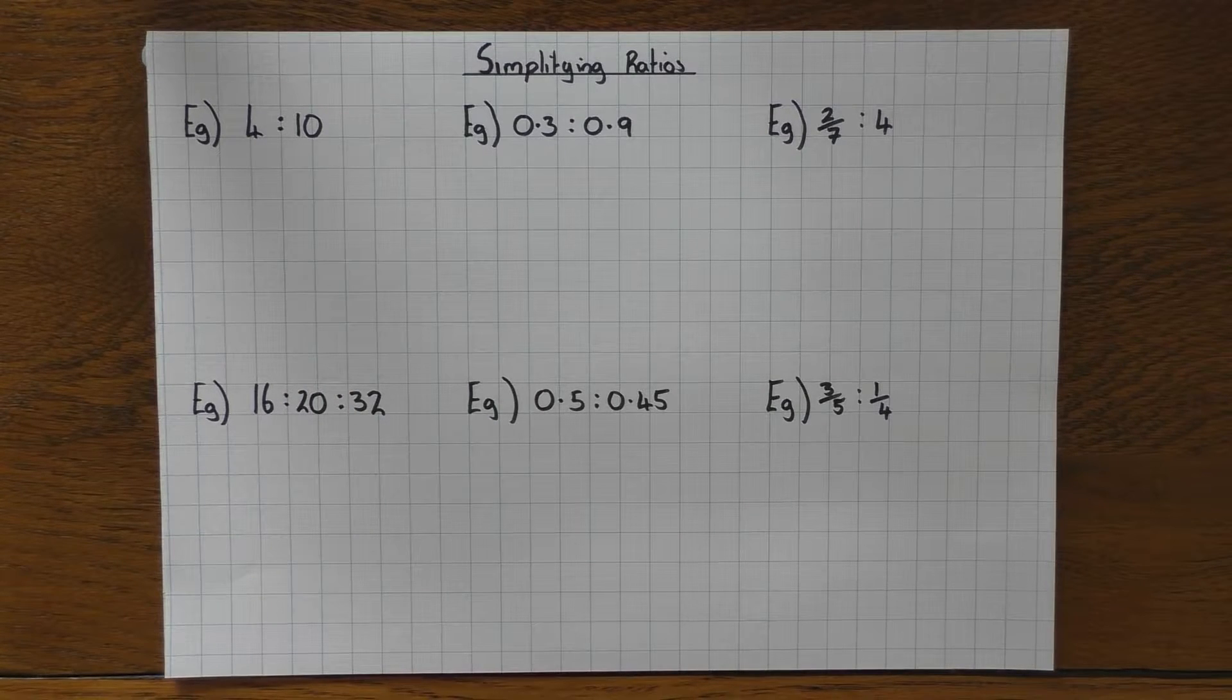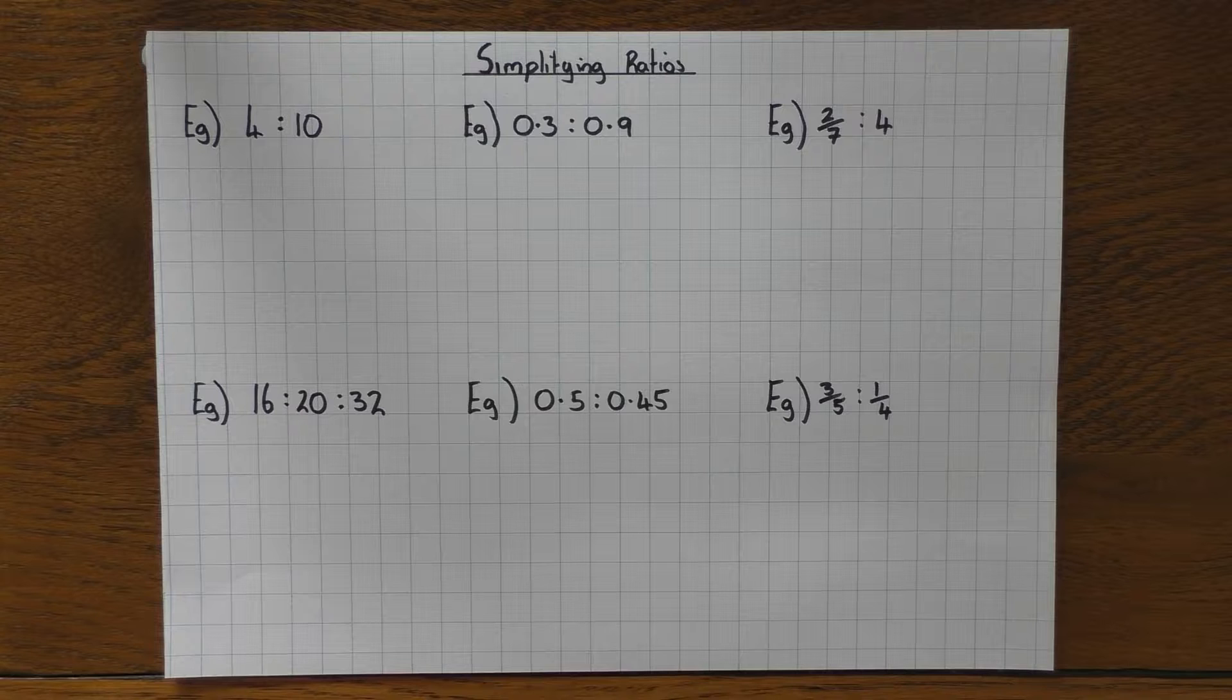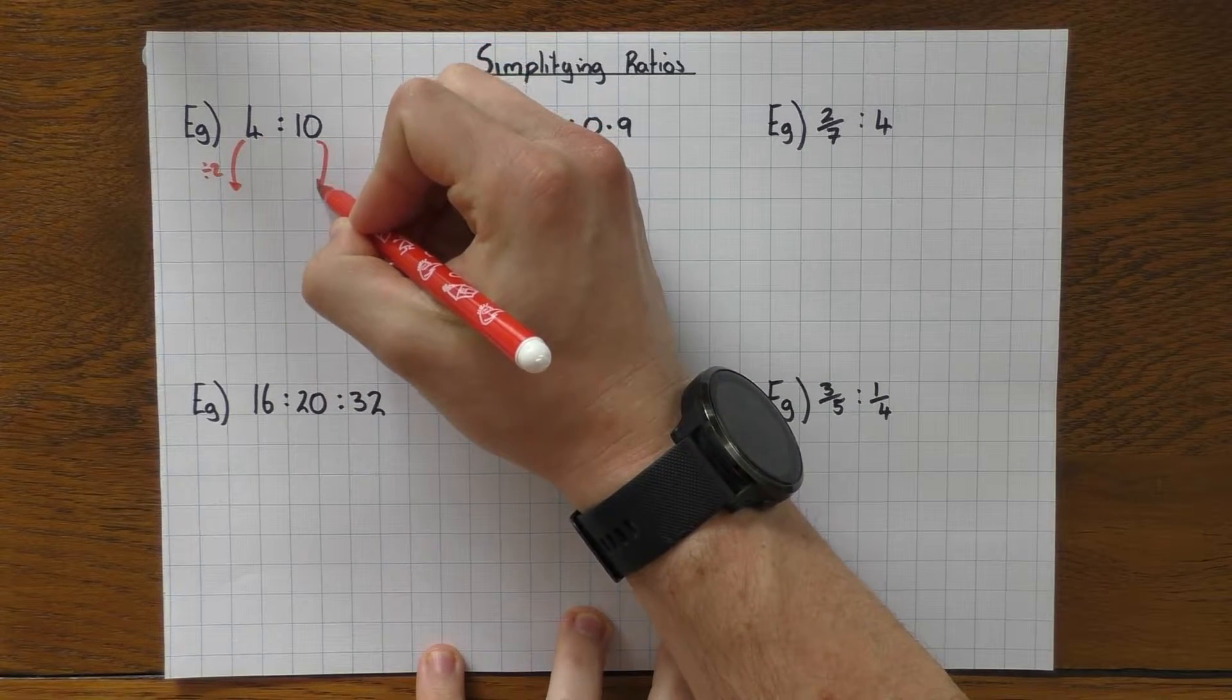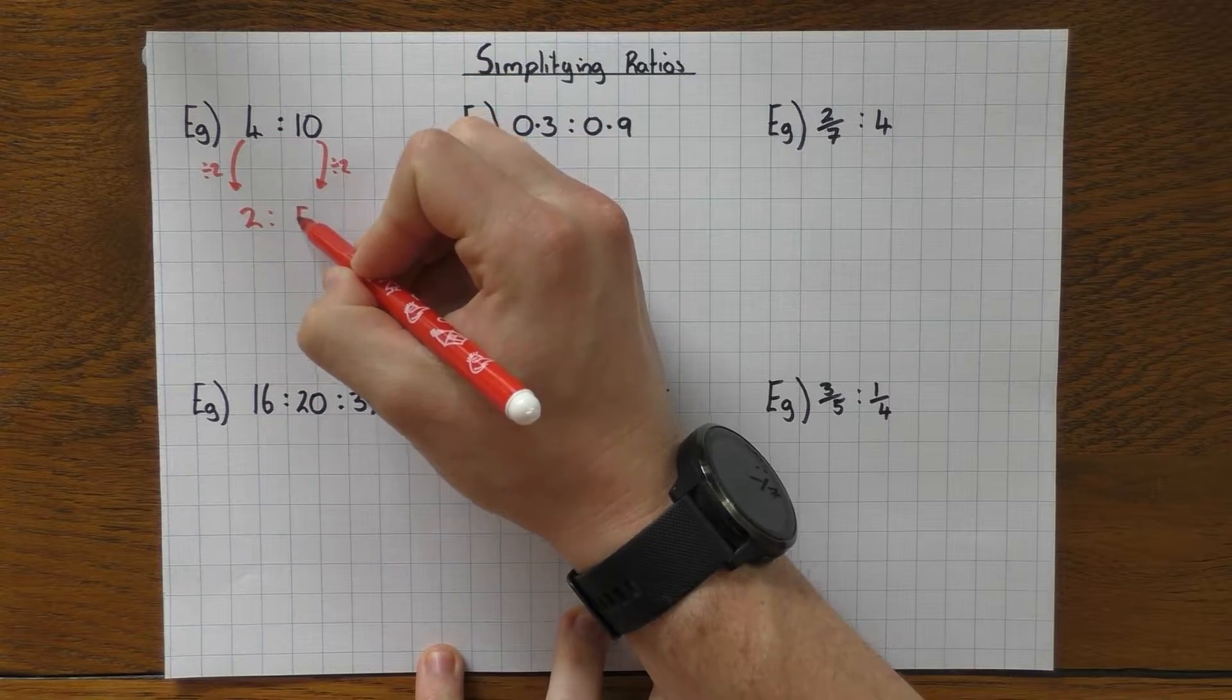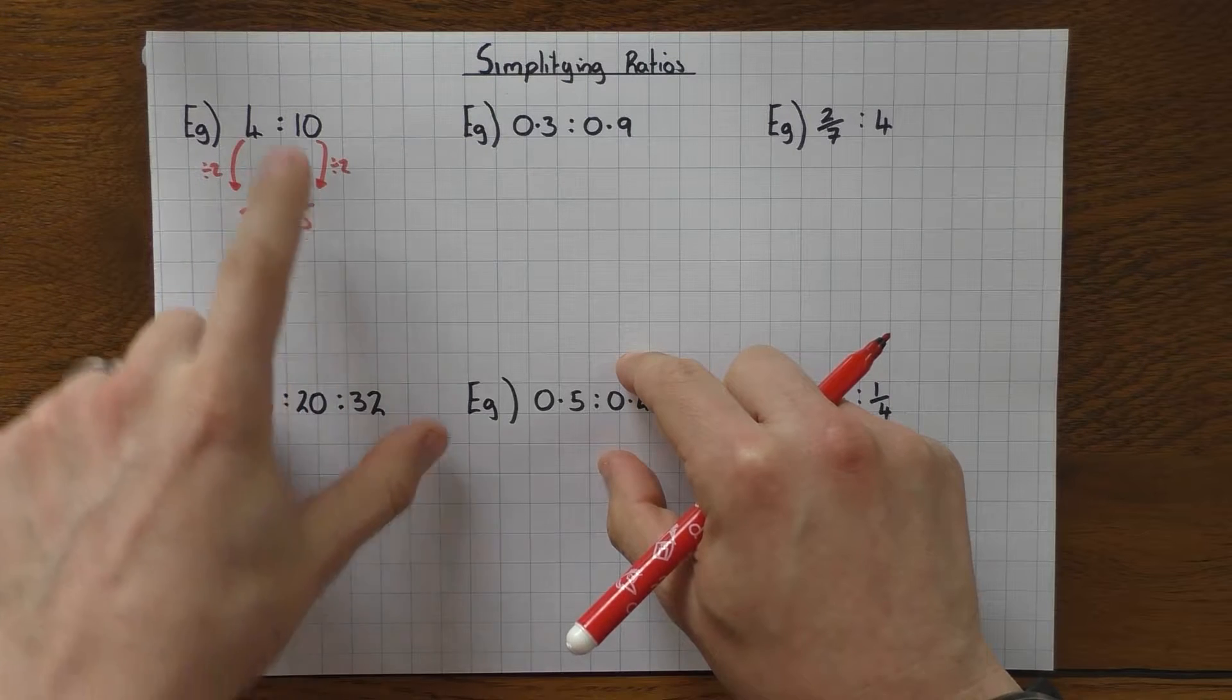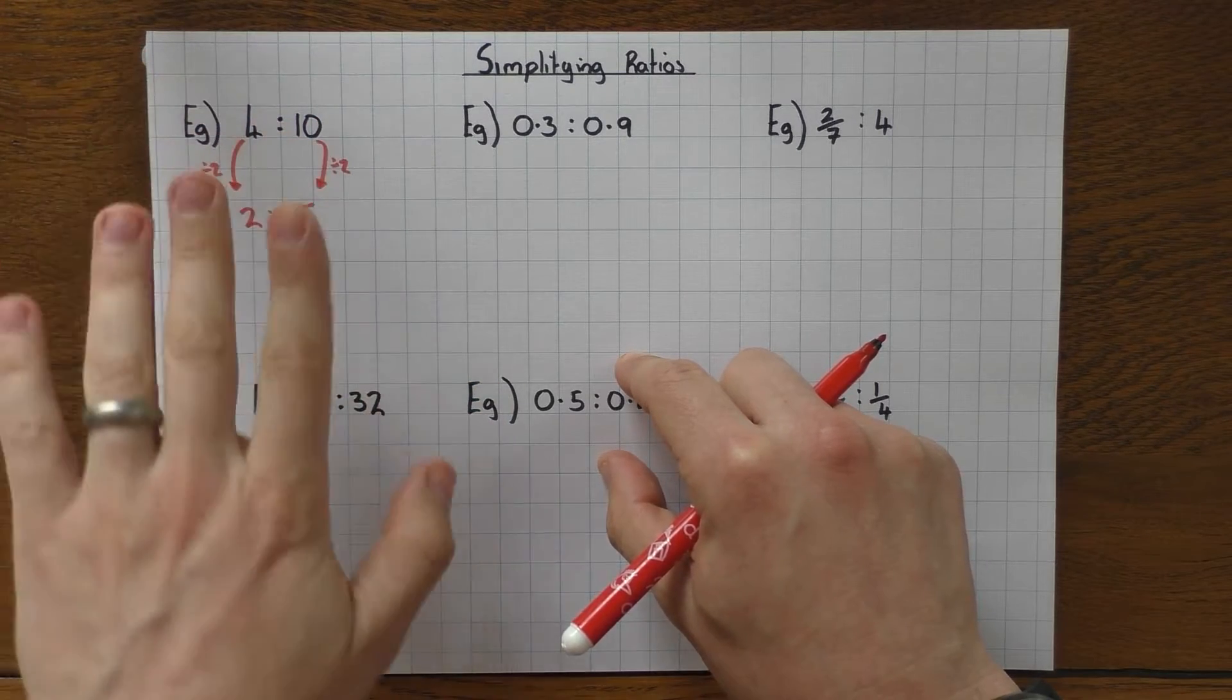So we'll start off nice and simple. We treat these the same way we would do when we were simplifying fractions. 4 and 10, we say to ourselves, what number goes into 4 and 10? In this case, there's only one option, which is 2. So we divide both sides by 2. So 4 divided by 2 is 2, 10 divided by 2 is 5. Key thing, if you re-write your answer somewhere else on the answer page in the exam, make sure it stays in that order. If you swap them around, you'll get the answer wrong. So as long as you're simplifying and keep everything the same side, you'll be absolutely fine.